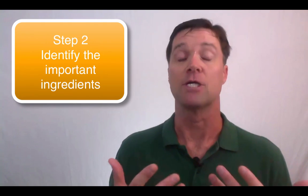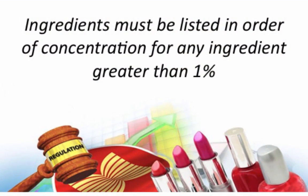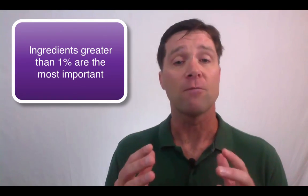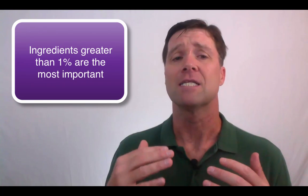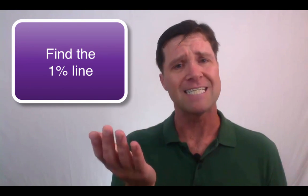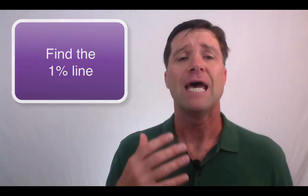Step two is to figure out what the important ingredients are. After you have that LOI, you need to analyze it to figure out which ingredients are crucial to the function of the formula and which ones are less important. To do this, it is extremely helpful to know the rules related to labeling cosmetic ingredients. The most important rule for that purpose is that ingredients must be listed in order of concentration for any ingredient greater than 1% concentration.